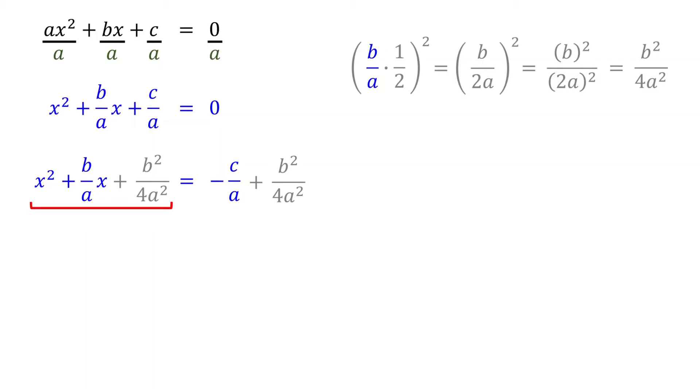Next, rewrite this trinomial as a binomial square, which will be x plus b over 2a squared. The number in the binomial corresponds to half of the coefficient of x in the perfect square trinomial.